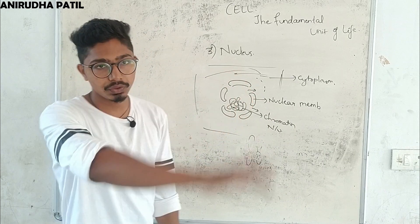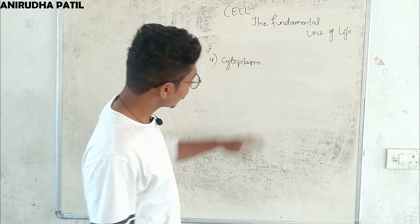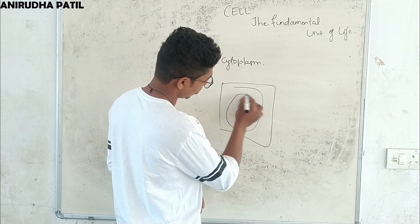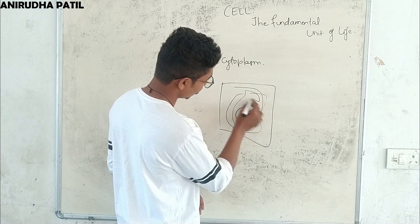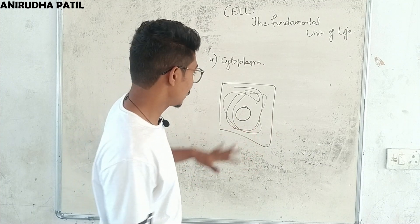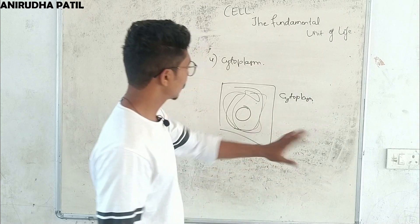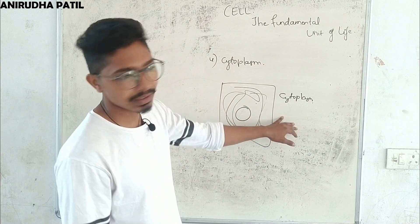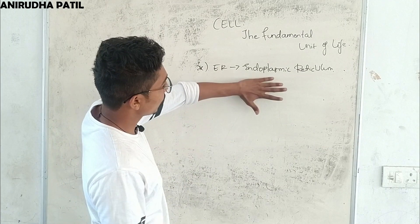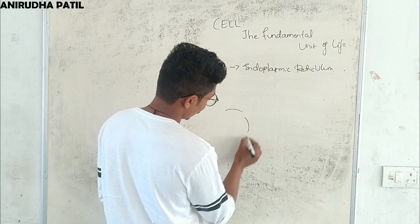Chromosomes can be seen only during the phase of cell reproduction, not during other phases. Before reproduction, they appear as chromatin network. The cytoplasm is the fluid-like part in which all cell organelles are present.